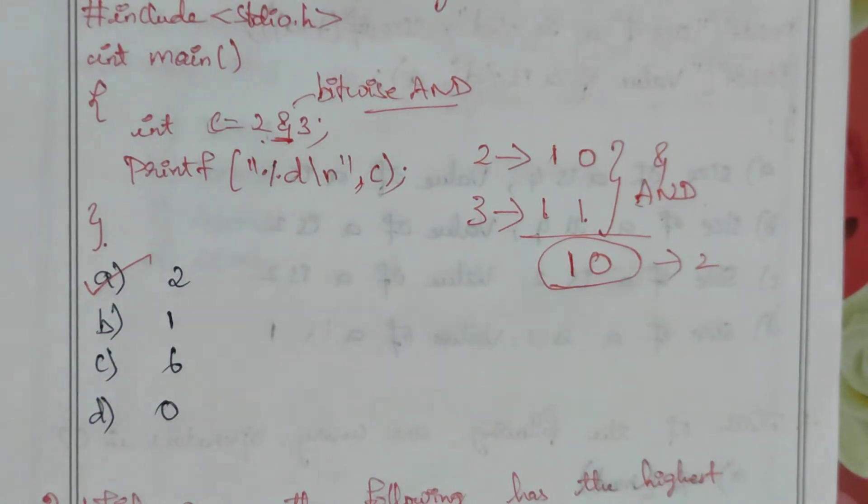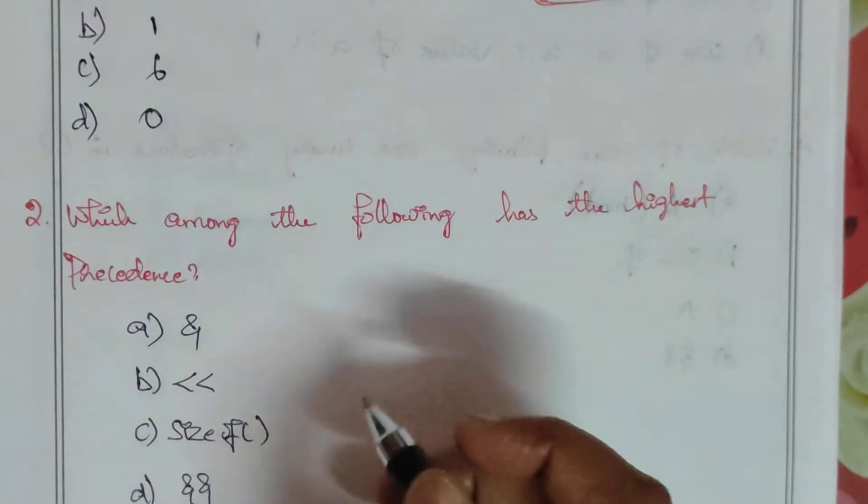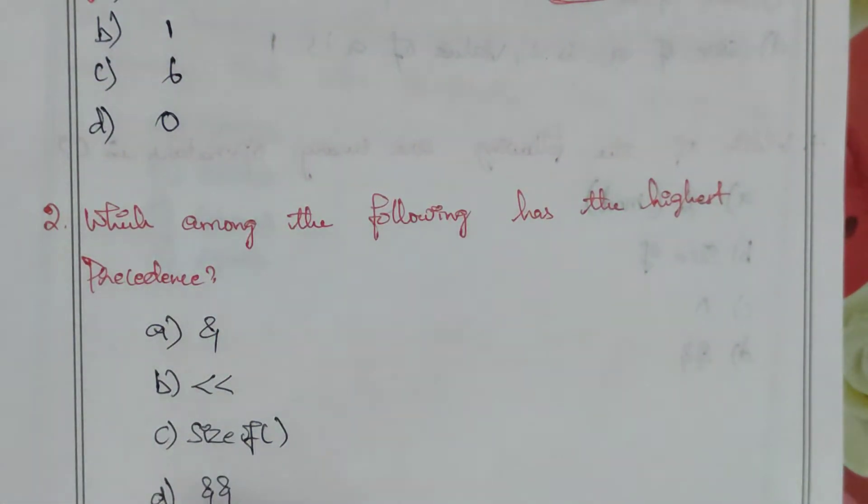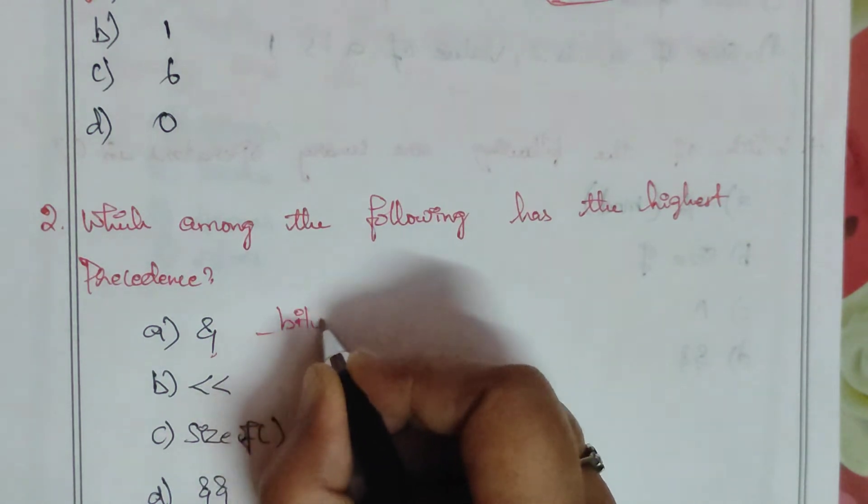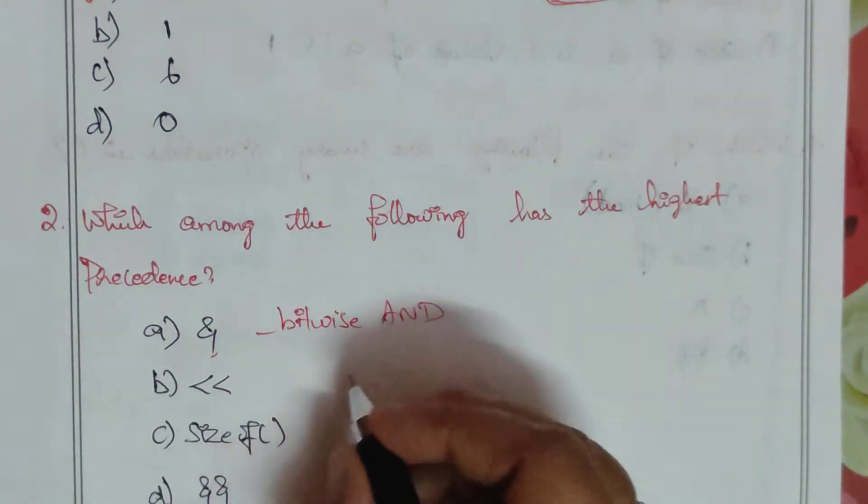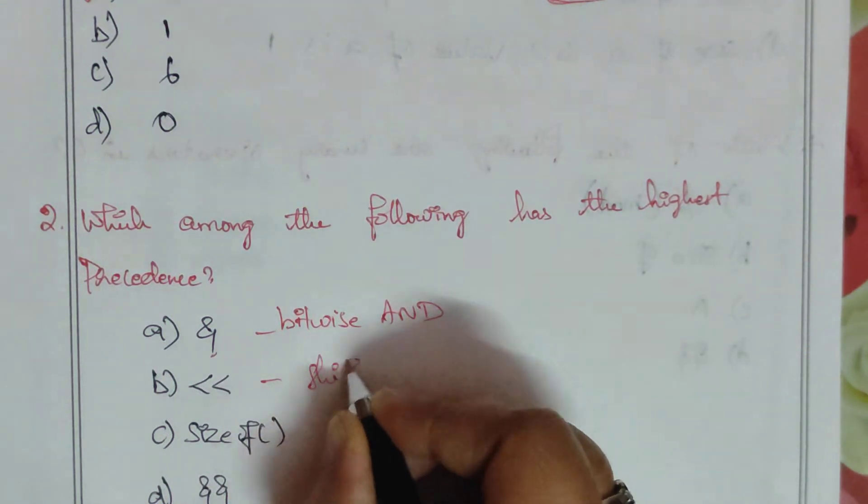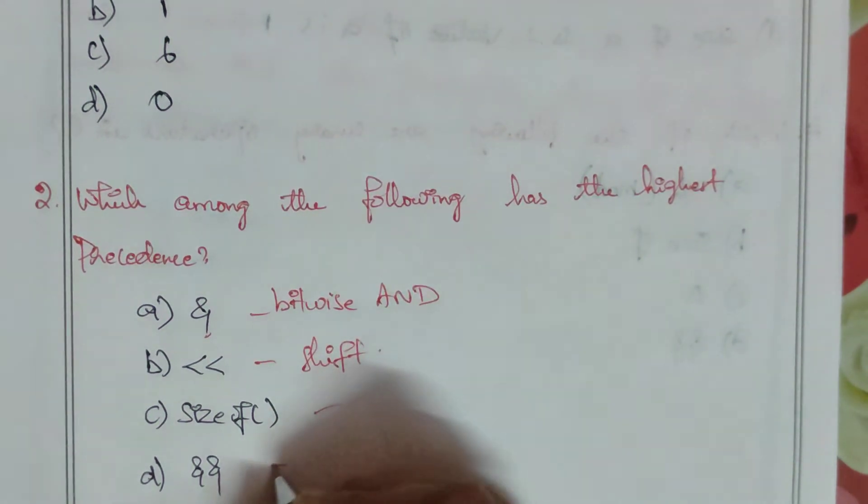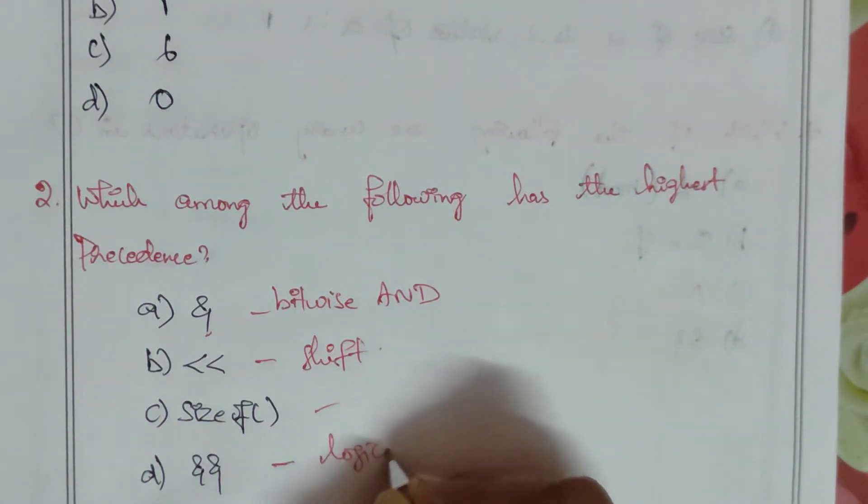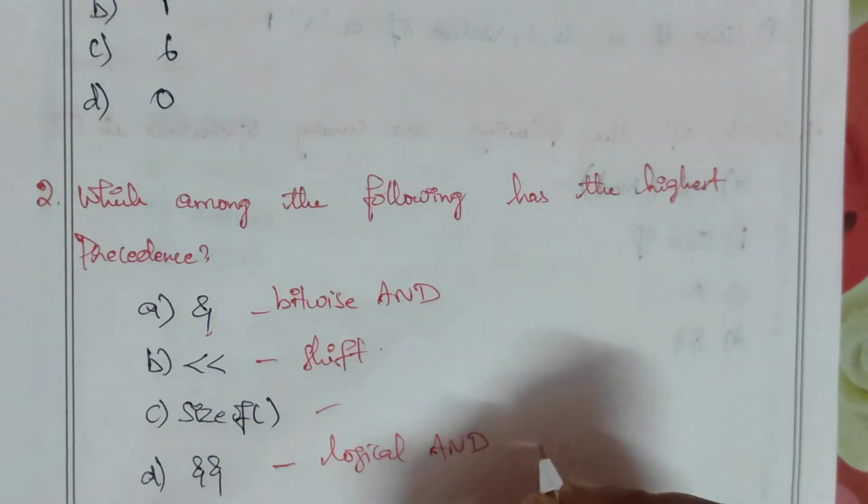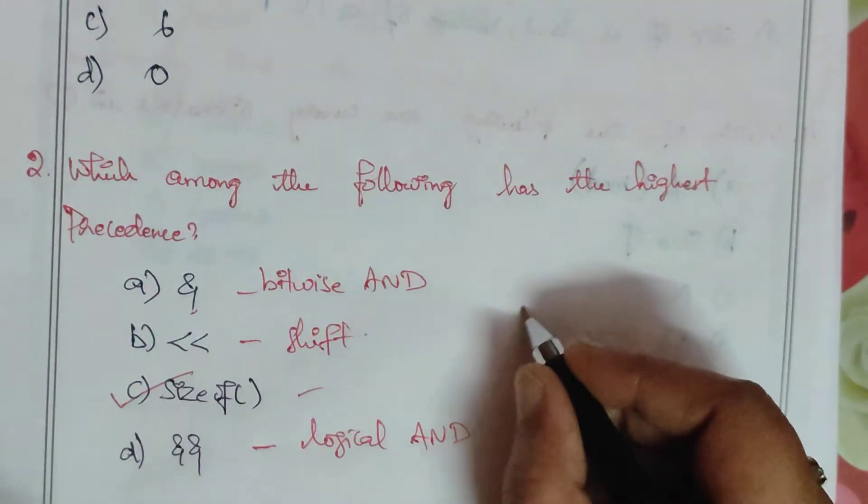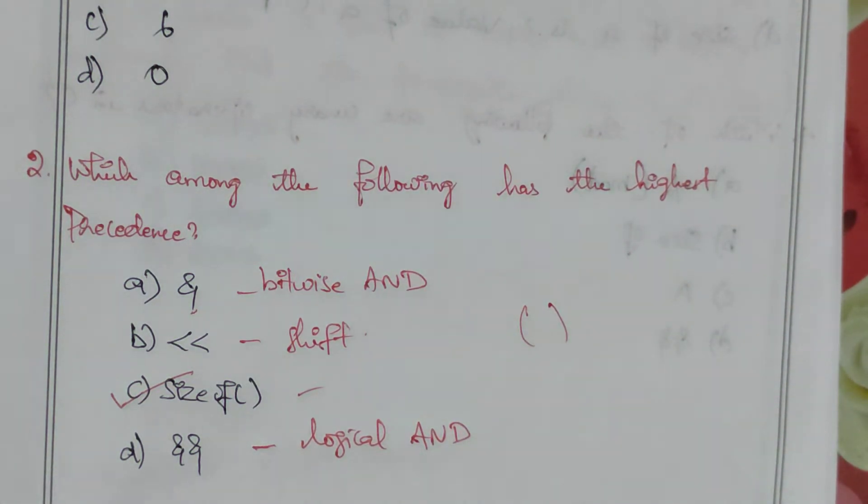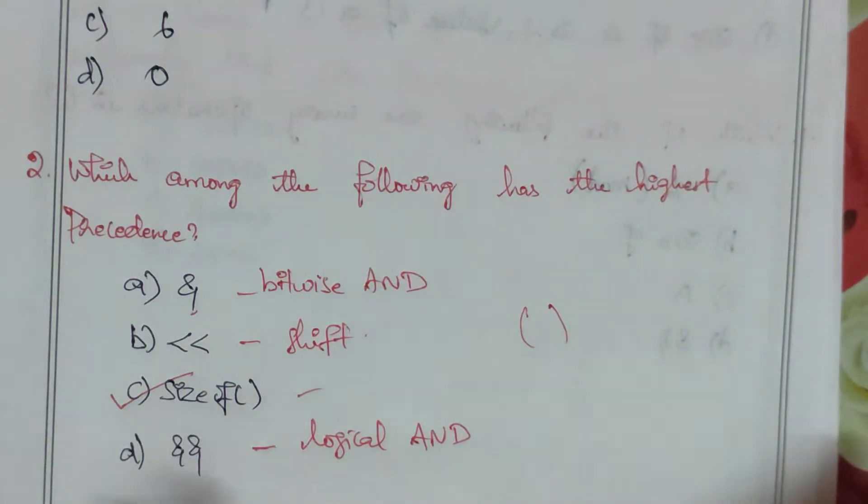Next, the second question: which among the following has the highest precedence? The options are: bitwise AND operation, shift operation, size of operation, and double ampersand which is logical AND operation. Size of is having the highest precedence from these options.